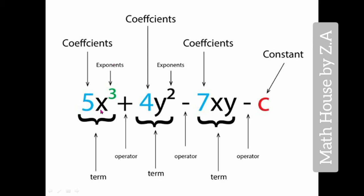In 4y², 4 is a coefficient, y is the variable, and 2 is the exponent. In the third term 7xy, these variables have a power of 1 or exponent 1 by default - we don't write it, but we understand that xy has power 1. And c is a constant term.